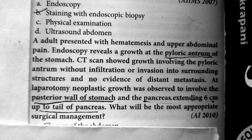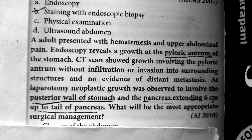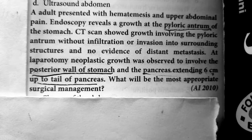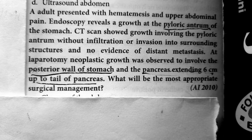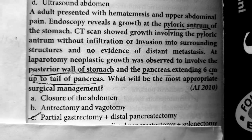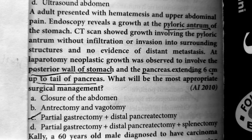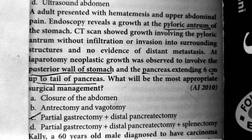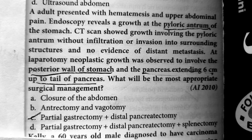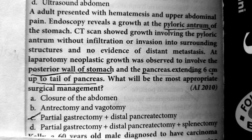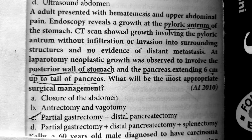The tumor is also extending into the pancreas, so you should remove the affected pancreas as well. Since it is mainly extending into the tail of the pancreas, you should do a distal pancreatectomy. So the answer is option C. It is not option D because the tumor is not involving the spleen — if the tumor is not involving the spleen, you need not do a splenectomy.